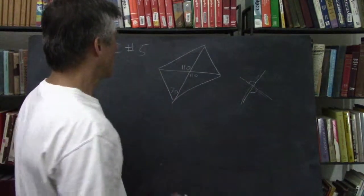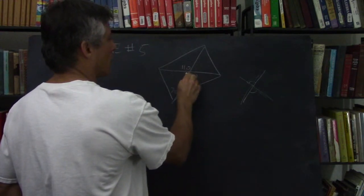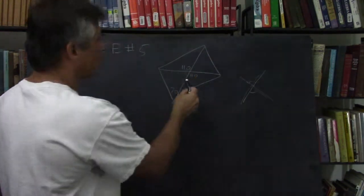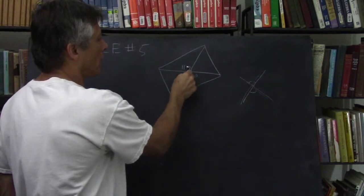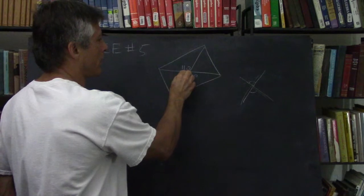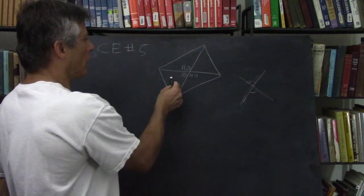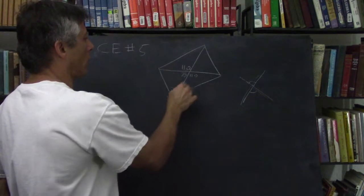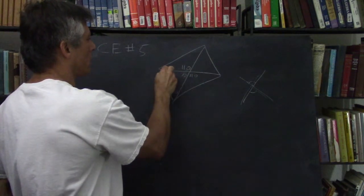Okay, and then this is... these are two supplementary angles. If you have two angles on one side of a straight line around a point, they're supplementary. So that must be 70. And then this is a triangle and the angles add to 180. That's 140, so this must be 40.